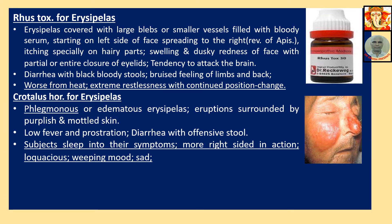Now the remedies. Rhus Tox for Erysipelas: Erysipelas covered with large blebs or smaller vessels filled with bloody serum, starting on the left side of face, spreading to the right — reverse of Apis, which starts on the right and moves to the left. Itching specially on hairy parts; swelling and dusky redness of face, with partial or entire closure of eyelids. Tendency to attack the brain. Diarrhea with black bloody stools. Bruised feeling of limbs and back. Worse from heat. Extreme restlessness with continued position change to get relief; the patient changes position very often.